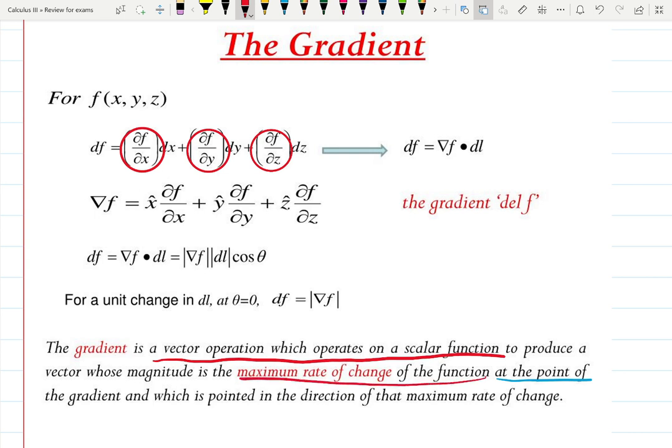And then at the point of the gradient, it will point to the direction of the maximum rate of change. So, we are asked to find the last one.